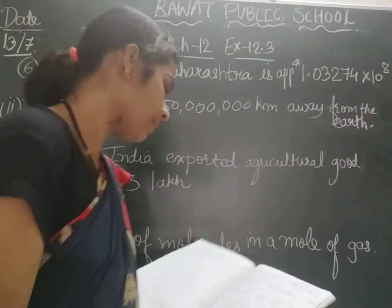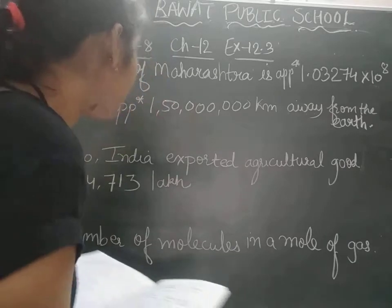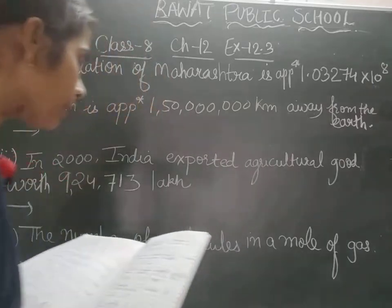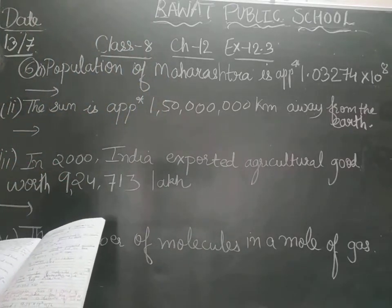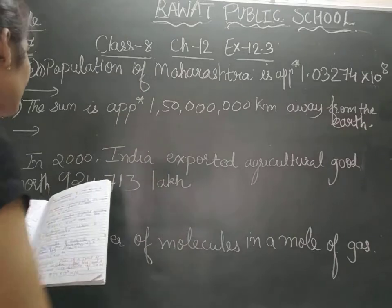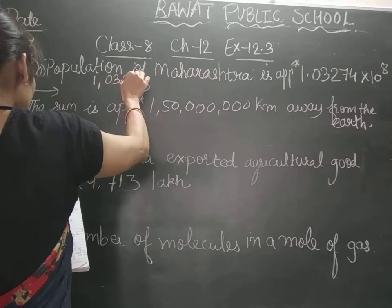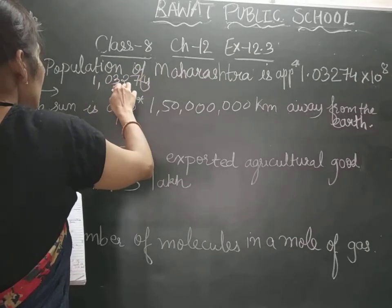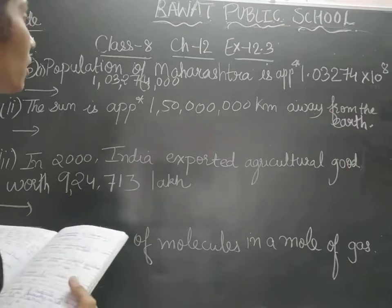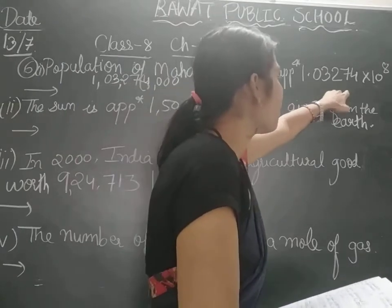Now in the next question: write the number or the measure given in each of the following statements in the standard form. The first question says the population of Maharashtra is approximately 1,03,27,400. We have to write it in the standard form. The population is 1,03,27,400, and the standard form of it is 1.03274 into 10 raised to 8.